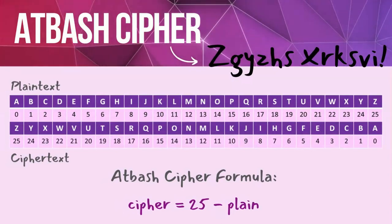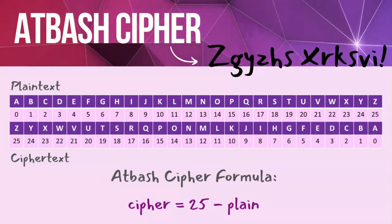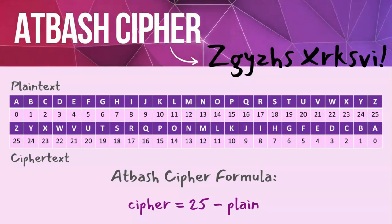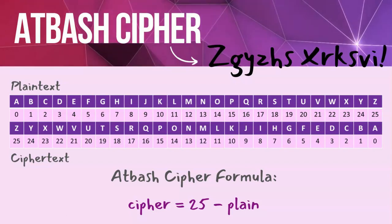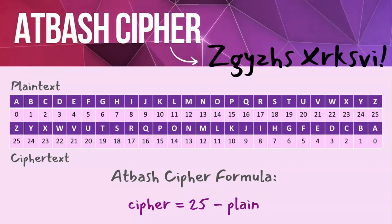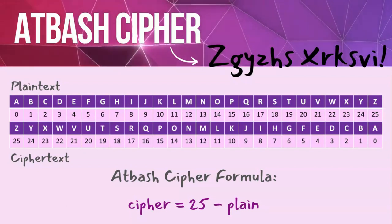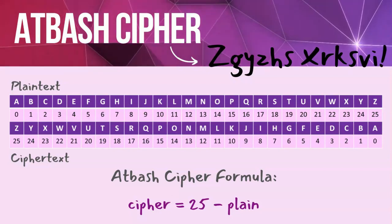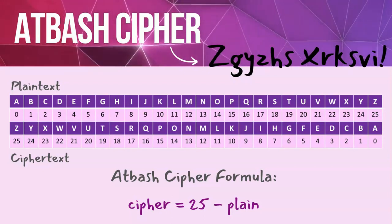You can see the alphabet in the plaintext from A to Z, and what it becomes in the ciphertext from Z to A. The table also shows the position of each letter. So A at position 0, when encrypted, becomes Z at position 25. We use numbers so we can work out a formula for the encryption process. The formula is: cipher position equals 25 minus the plaintext position.